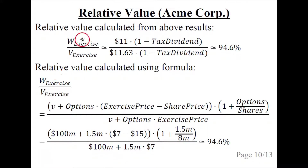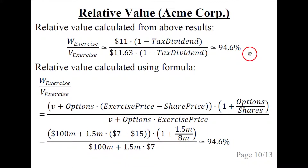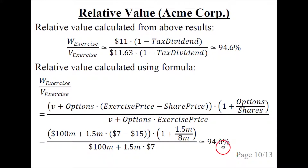The relative value of making the share buyback can be calculated using the results we just had. We compute W exercise divided by V exercise, insert the numbers calculated in the previous two slides, and get about 94.6%. This means that when we exercise the stock options and buy back shares under these assumptions, the value to eternal shareholders is decreased by about 5.4%. We can also calculate this using the relative value formula directly by plugging in all the numbers — V $100 million, options 1.5 million, and so on — and get the same result.